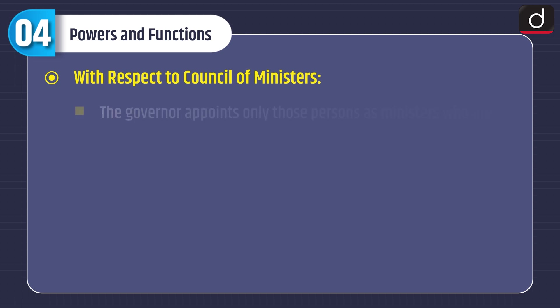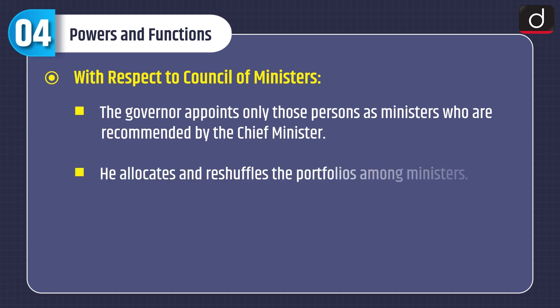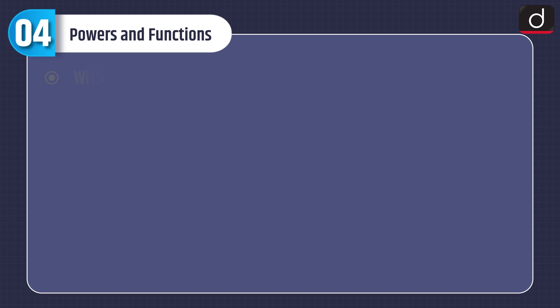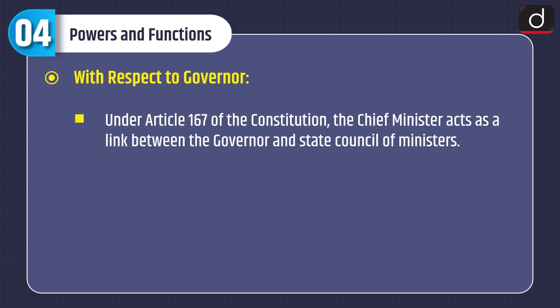Now let's look at the powers and functions of the Chief Minister with respect to the council of ministers. The Governor appoints only those persons as ministers who are recommended by the Chief Minister. He allocates and reshuffles the portfolios among ministers. He can bring about the collapse of the council of ministers by resigning from office, since the Chief Minister is the head of the council of ministers.